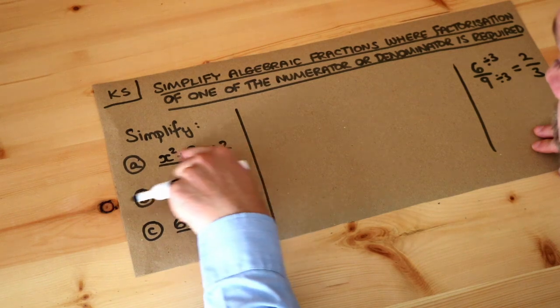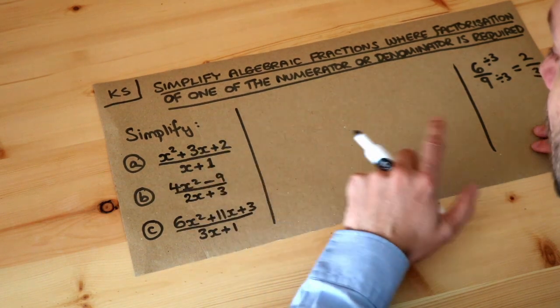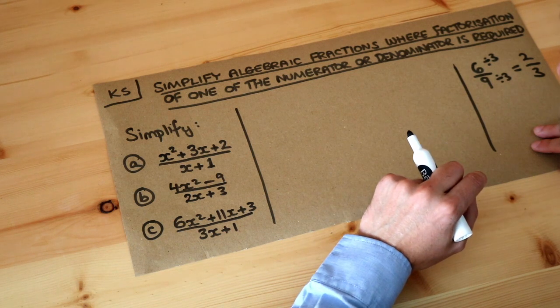Now there's stuff we would like to divide top and bottom by, but in order to have stuff we can divide by, we need to factorize the top and bottom first.